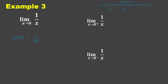For the right-hand limit, we have 1 over 0.001: the numerator is positive over positive, so positive divided by positive gives positive infinity. For the left-hand limit, we have 1 over negative 0.001: that is positive over negative, which gives negative infinity.